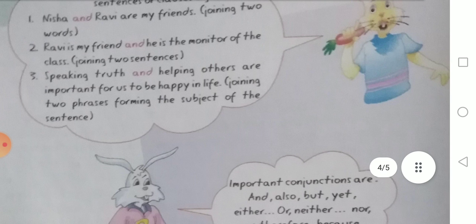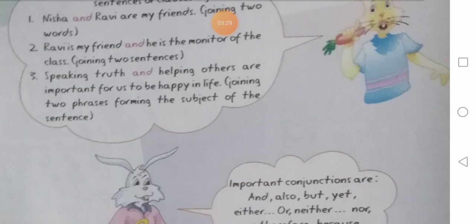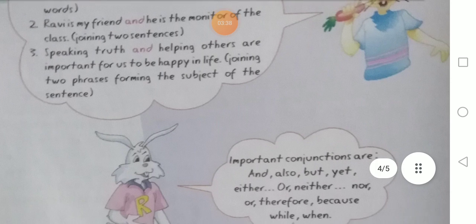Speaking truth and helping others are important for us to be happy in life. यहाँ पर क्या दिया है — कि सच बोलना और दूसरों की मदद करना हमारी ज़िंदगी में खुशी और सुकून देता है। यहाँ पर two phrases — speaking truth और helping others — को 'and' से जोड़ा गया है।